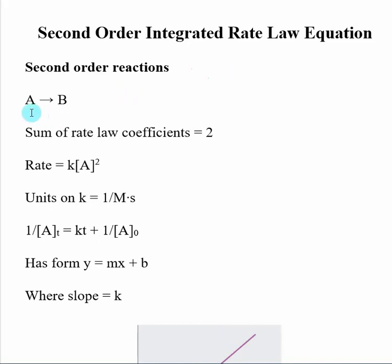If we look at a basic reaction, A going to B, and I tell you that it's second order, that means the summation of all the rate law coefficients is two. Here's an example of a rate law expression for a second order reaction: Rate equals k times the concentration of reactant squared. Overall, this is a second order reaction, which is why we're using it in this case.